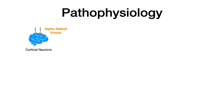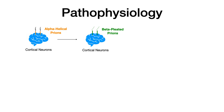The big thing to take away from CJD is the pathophysiology. Normally, prions are encoded by the PRNP gene and exist in alpha-helical configurations found on the surfaces of cortical neurons. The problem arises when the prion gets misfolded and goes from being mostly alpha-helical to being beta-pleated sheets — that is where the problem begins.